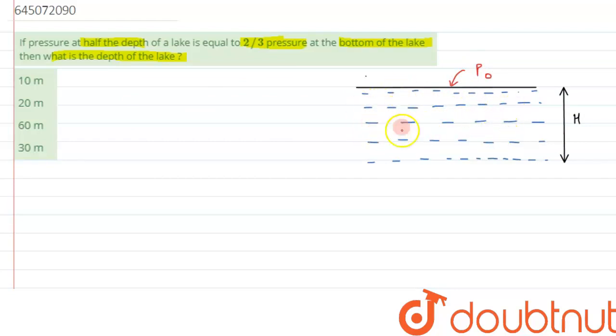And at every layer of the water inside the lake, atmospheric pressure is acting along with the gauge pressure. Gauge pressure, as we have studied in the theory part, is given by the formula ρgH.